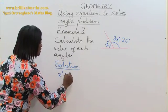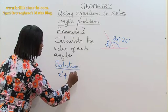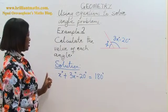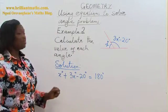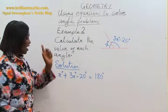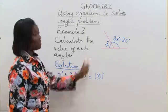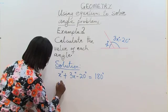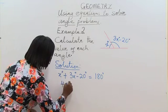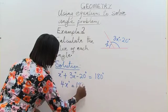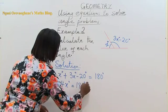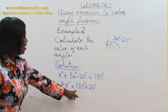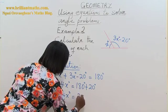x degrees plus 3x minus 20 is equal to 180 degrees. x and 3x are like terms so we add them together. And then take 20 degrees to the other side because 20 and 180 are constants. So we have 4x is equal to 180 degrees plus 20 degrees. 4x is equal to 180 plus 20 is 200 degrees.